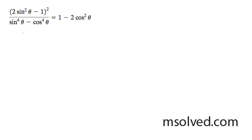What we have here is proof of this trig identity. It's a little confusing initially, but on top, this is actually equal to the double angle of the negative cosine — double angle, 2 theta — and all this quantity squared.